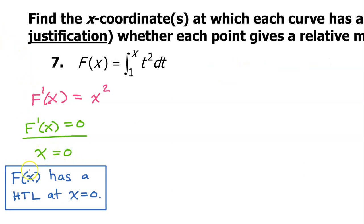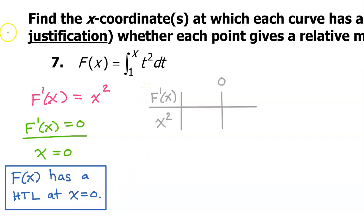So now we know that capital F of x has a horizontal tangent line at x equals zero. Next, we need to determine whether capital F of x has a relative maximum, a relative minimum, or neither at x equals zero. We can use the first derivative test to figure this out.